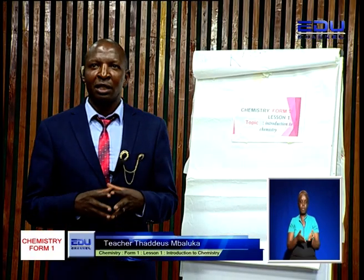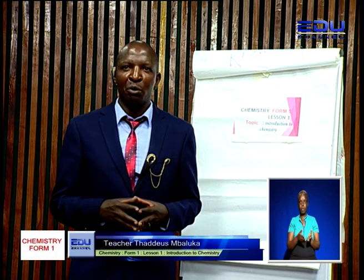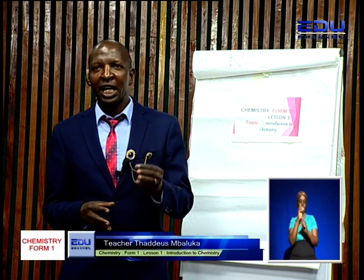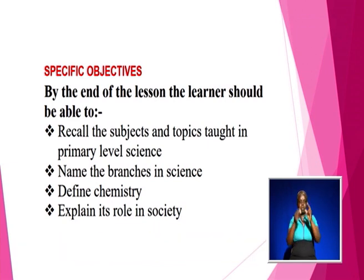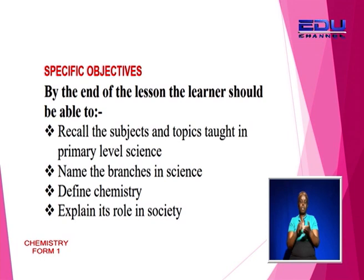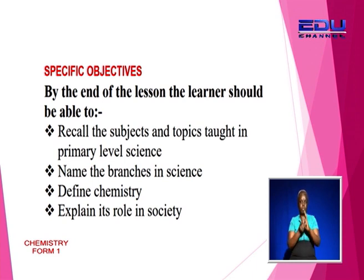Let's look at our lesson objectives. By the end of the lesson, the learner should be able to recall the subjects and topics that were taught in primary level science, name the branches in science, define chemistry, and explain its role in the society.